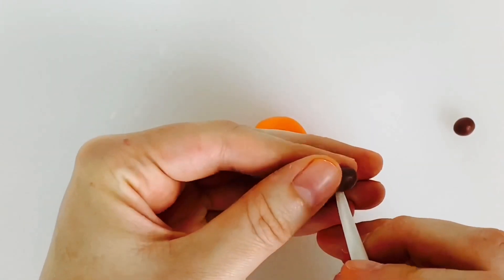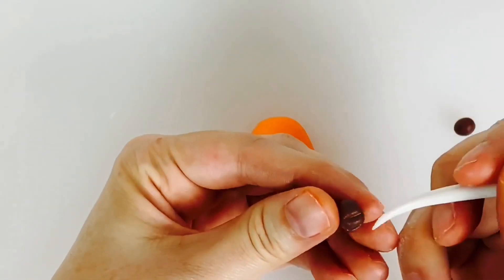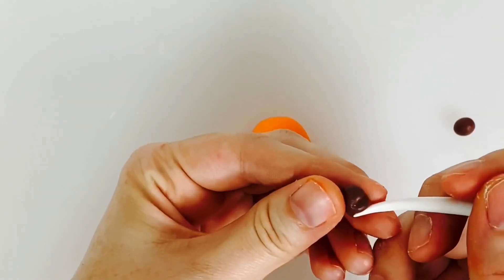For the front feet take two small balls of chocolate modeling paste and then use the Dresden tool to mark two lines down the side.